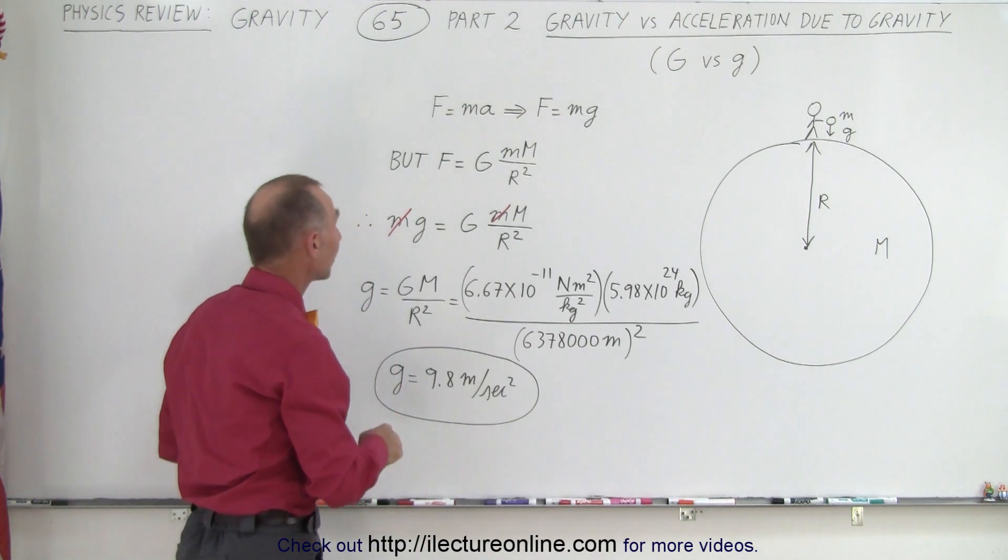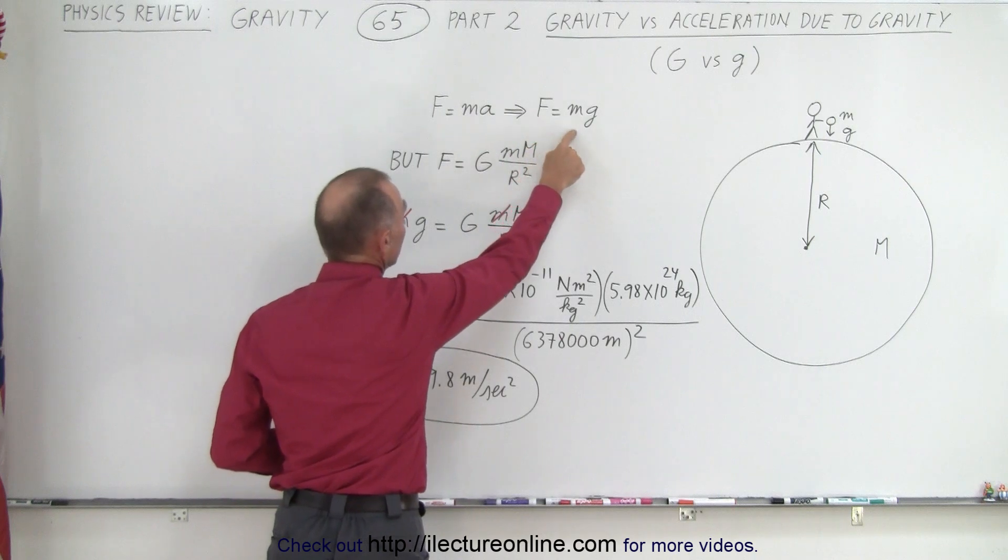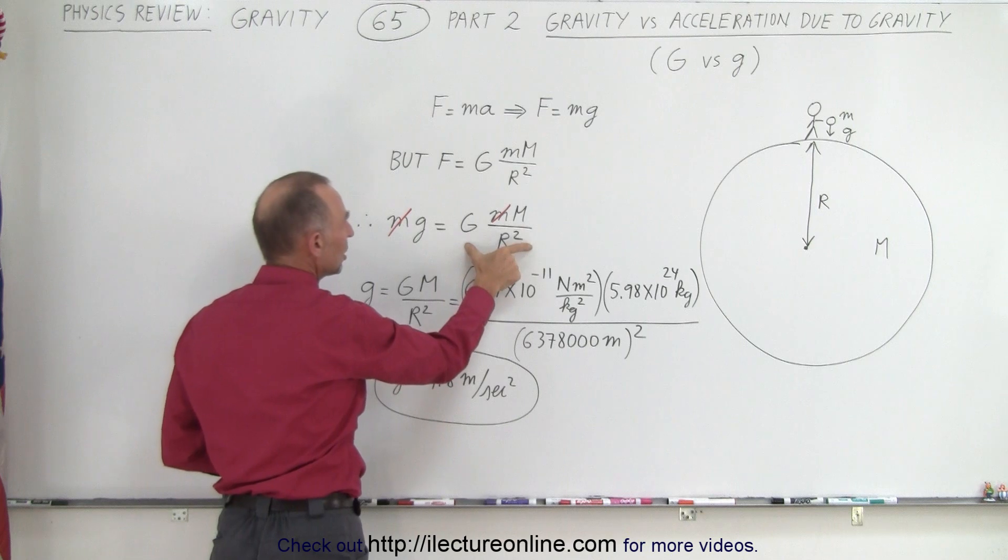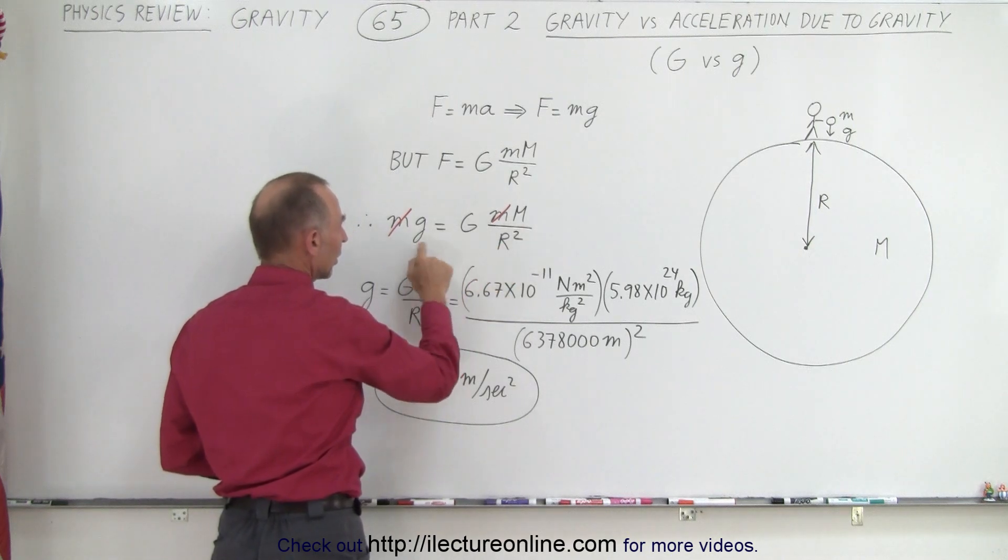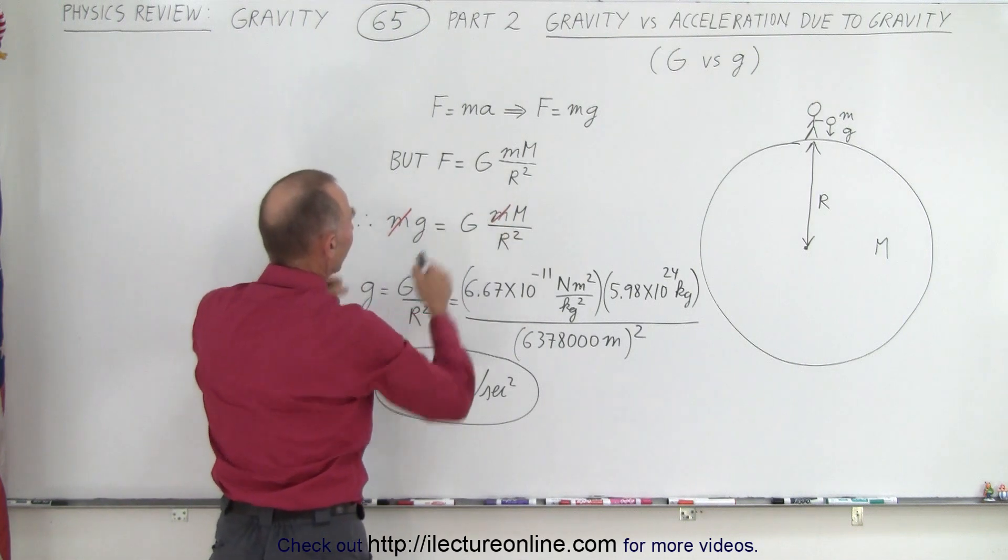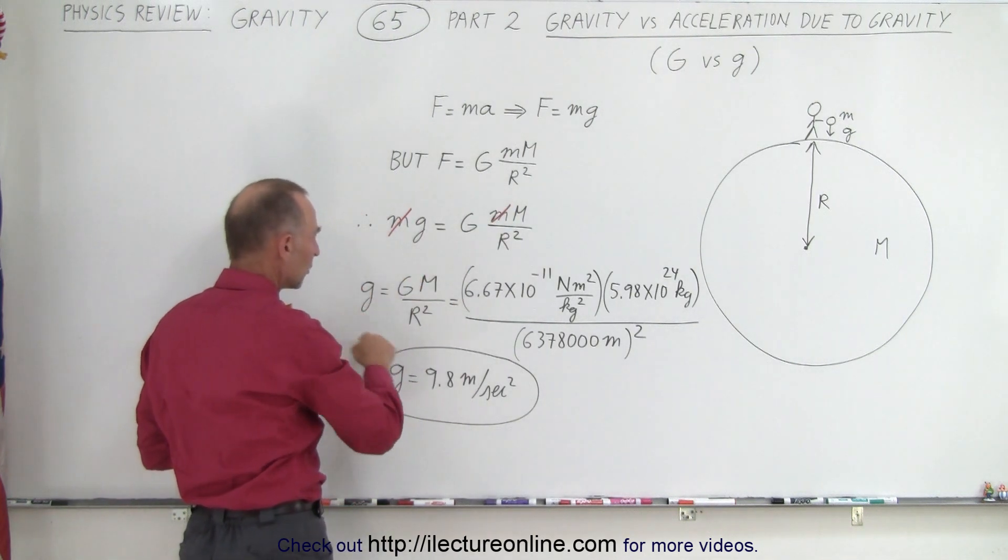Now we can set F equals mg equal to the force of gravity. So mg can be set equal to G times m times M over R squared. This is little g, and this is big G. Notice that the mass on both sides cancels out.